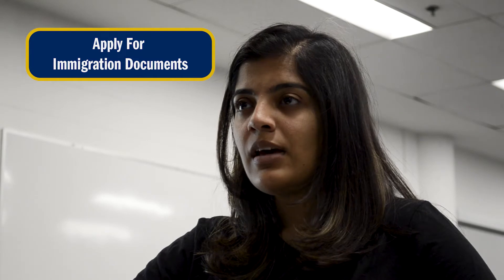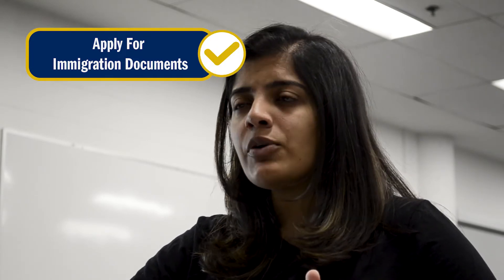So the second most important step is to apply for your Canadian immigration documents. First and foremost, to study at Humber you have to have a study permit and if your program has a mandatory placement you also need to apply for a co-op work permit. I would recommend that you do both at the same time to save time. Go on to the IRCC website to apply for both and as always Karan will upload a link in the description.